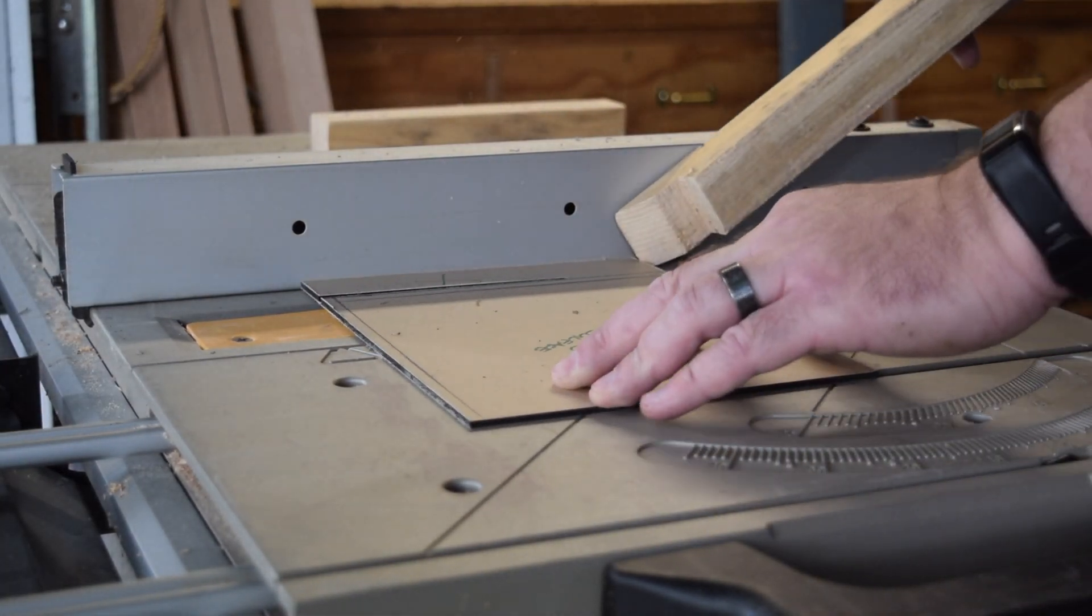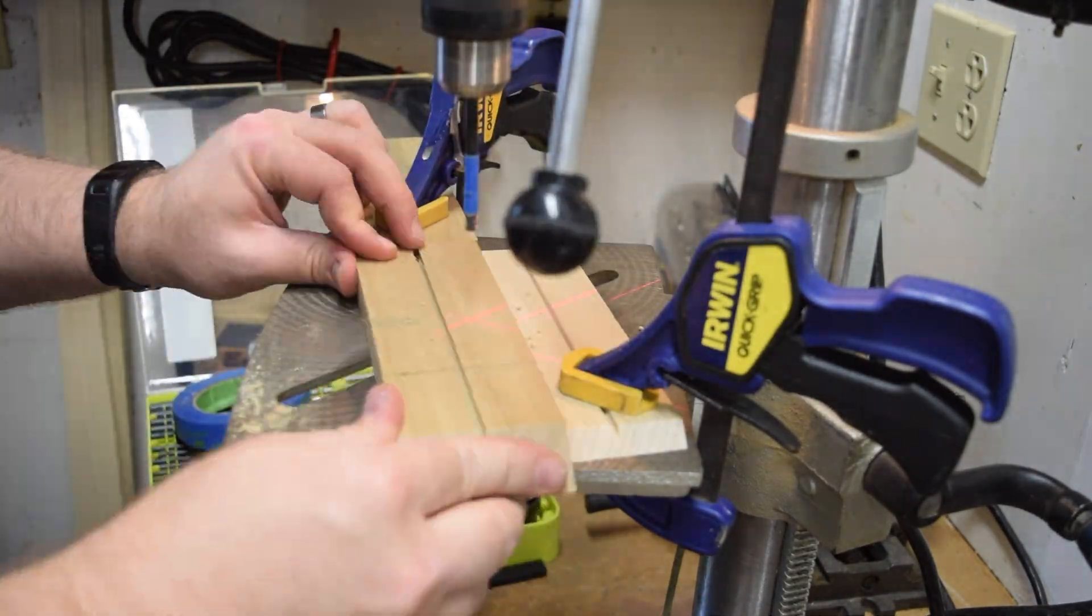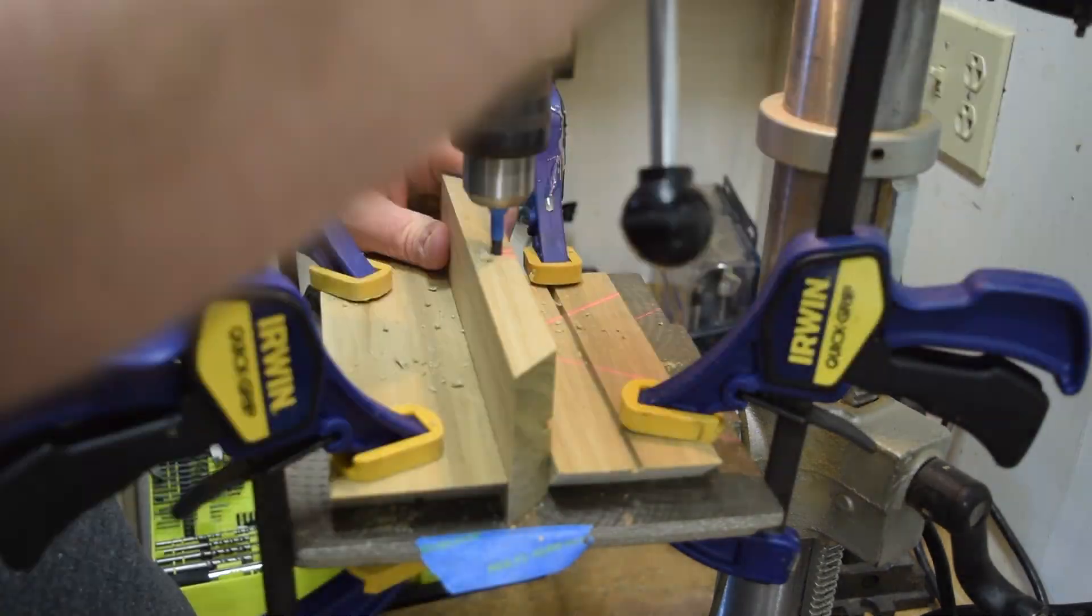A Lexan sheet was ripped down to form a 7-inch square rolling surface once assembled in the poplar box. Each side of the box was drilled for the sides of the LEDs.